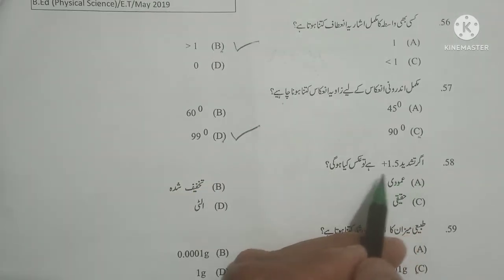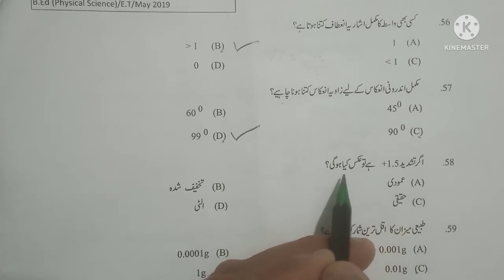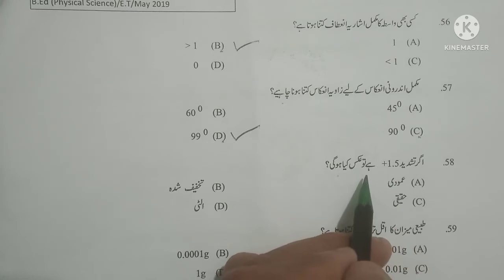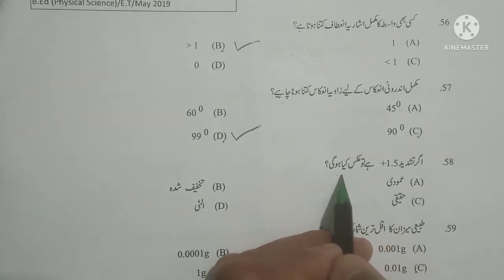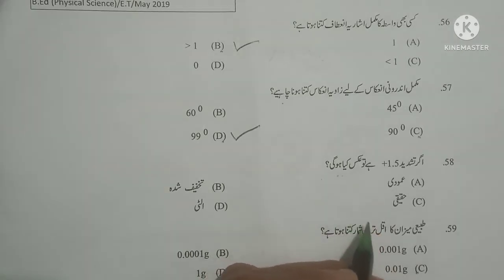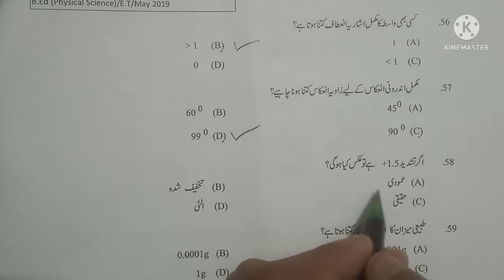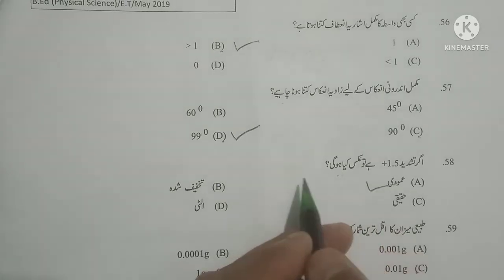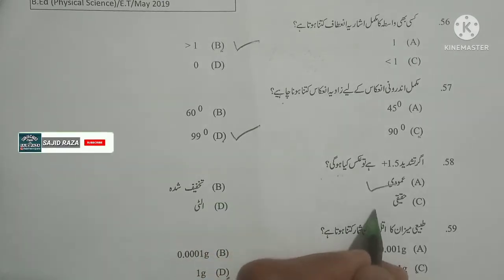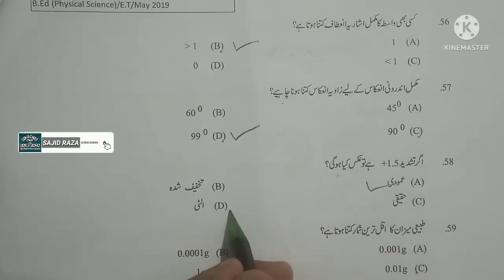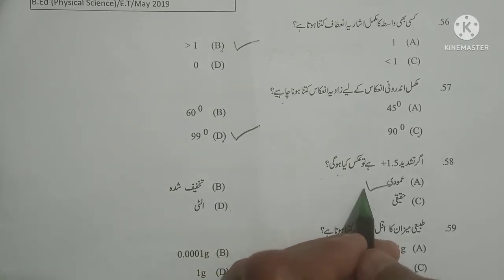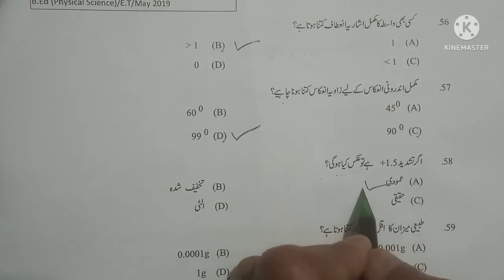Next question: Agar tashdiit plus 1.5 hai toh aks kya hogi? If the power of a lens is +1.5, then what is its image? As you know, if the power of a lens is +1.5 then its image is erect. The option given homudi means erect/perpendicular — it is correct. Takfif suda means horizontal, haqqiqi means real, ulti means inverted. Option A is correct.